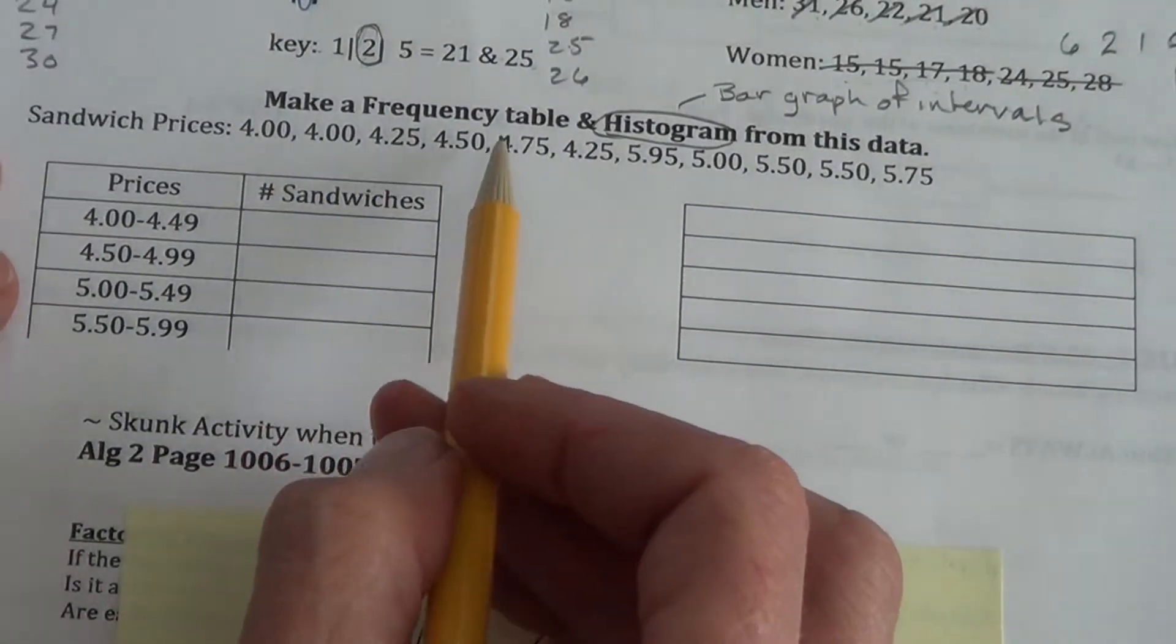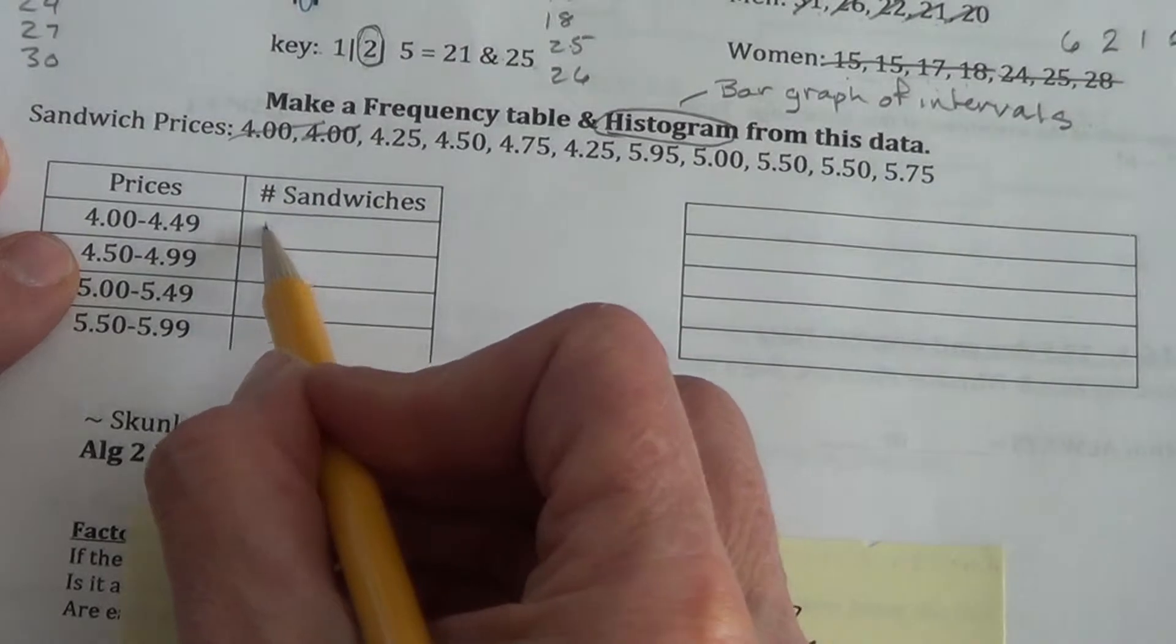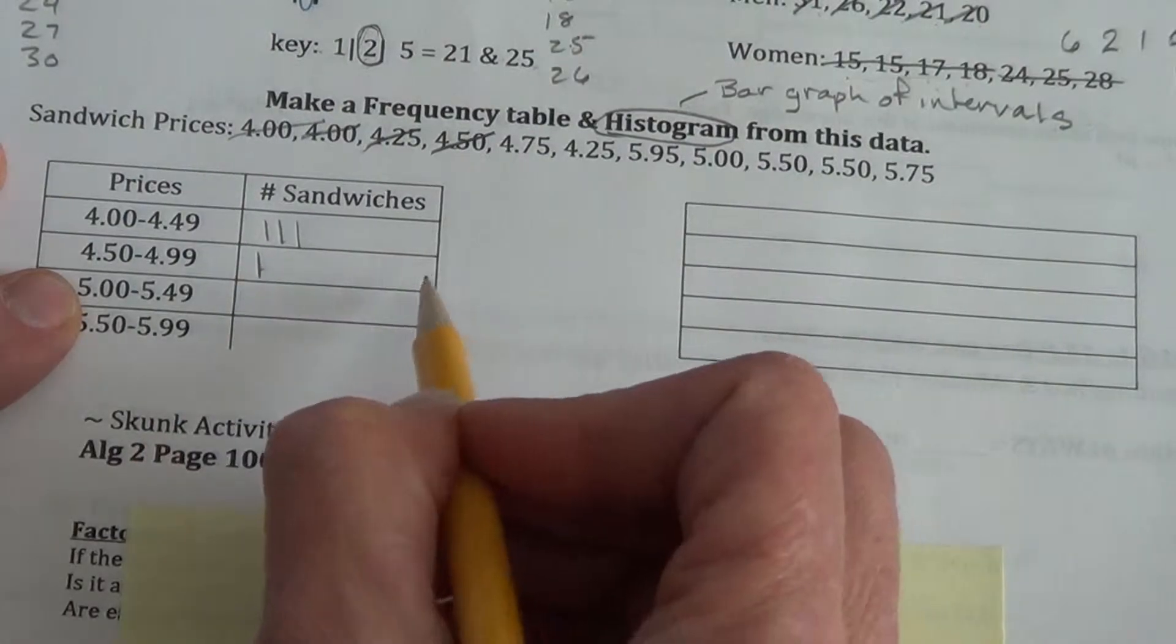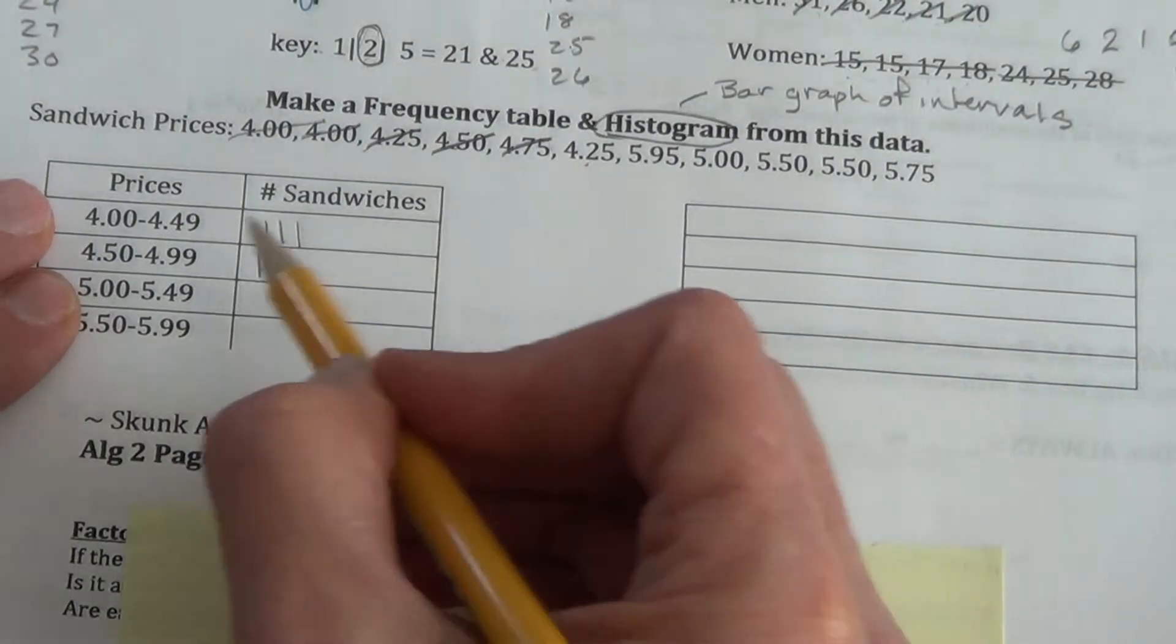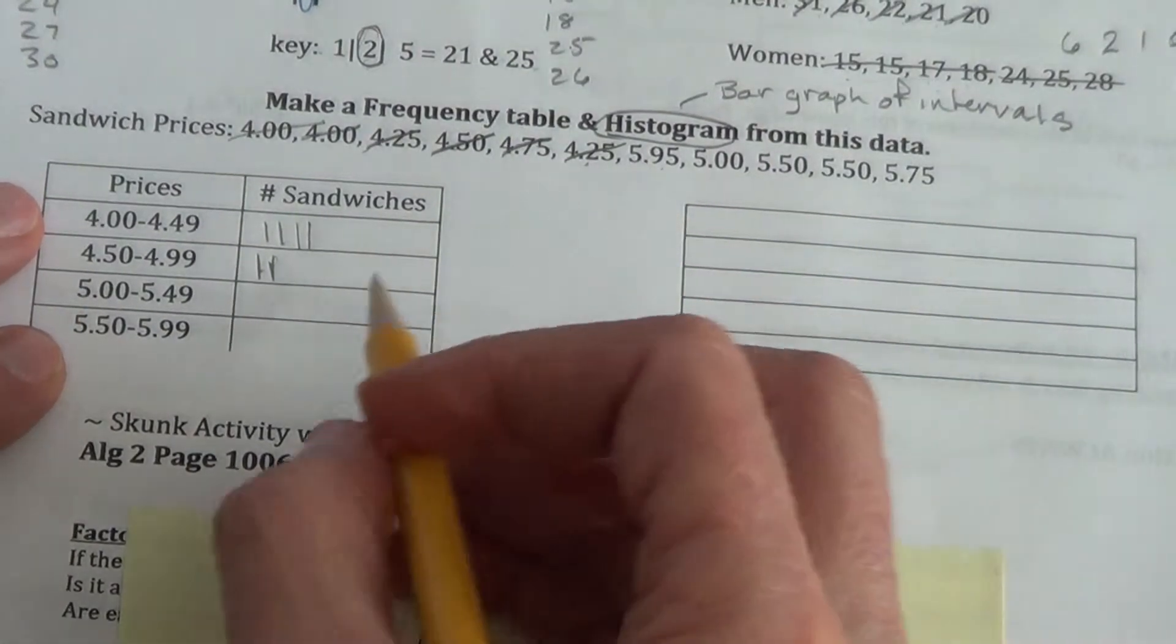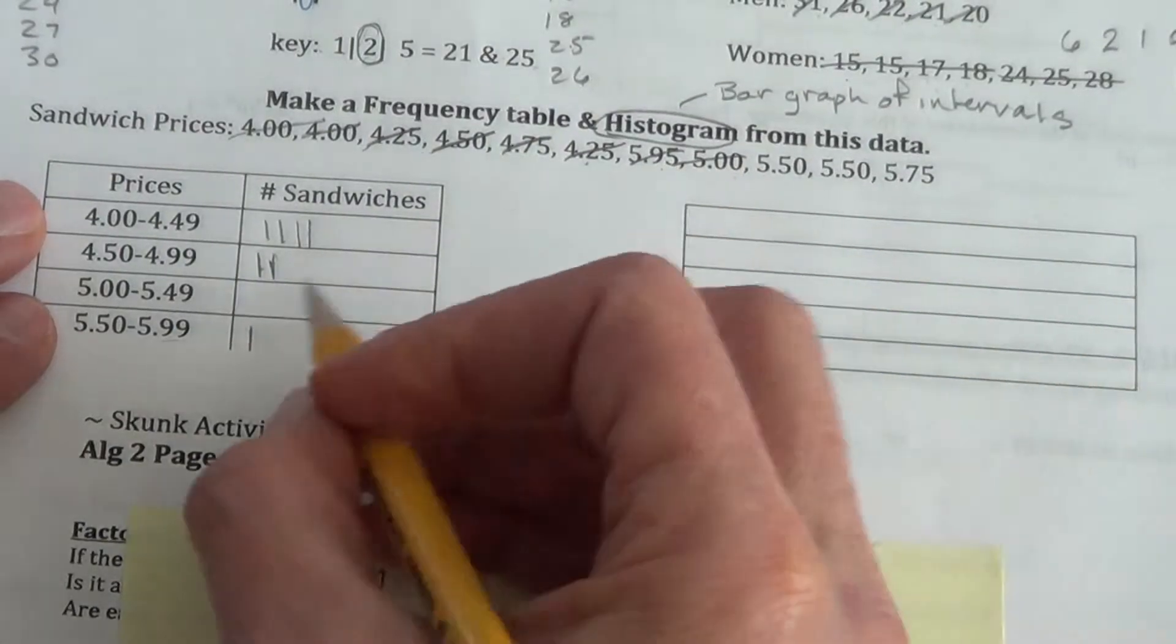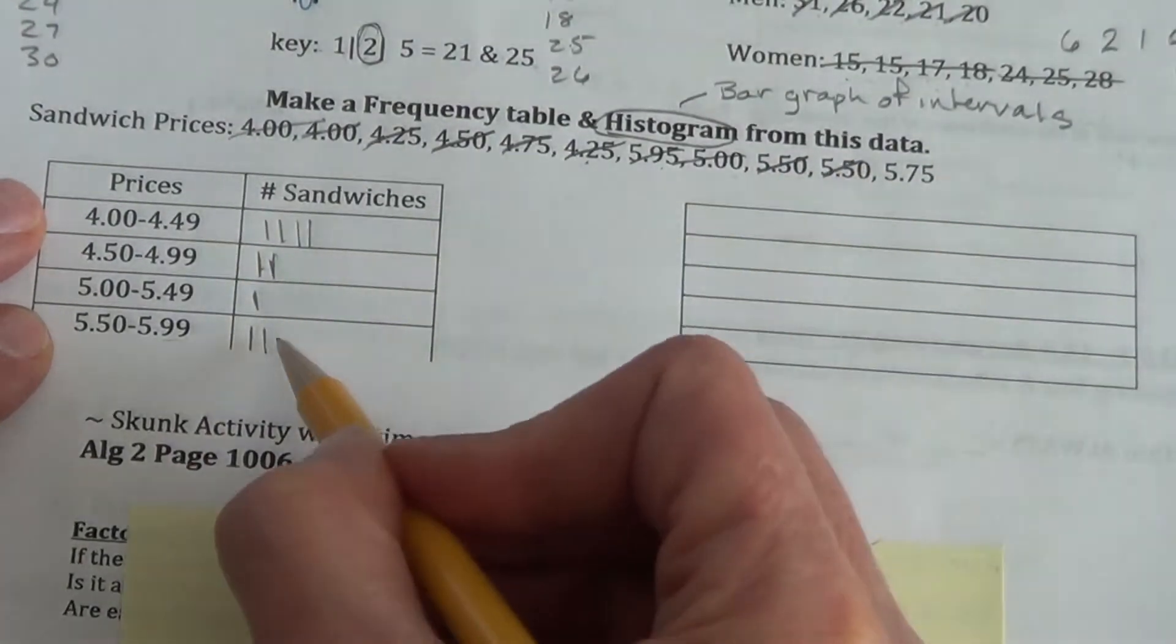So when we look at our data here, it says fill in the frequency table. Well, we have $4, $4, that would be two sandwiches in the $4 range. $4.25 would be between $4 and $4.49. $4.50 is actually up here at the next level, where it says $4.50. $4.75 is in that level as well. $4.25 comes back down to this lower level. $5.95 would be clear up here at the greatest level, not highest because that table is written the way it is. $5.00 would be in this third bracket. $5.50 in the greatest value. $5.50 again in the greatest value. Okay?